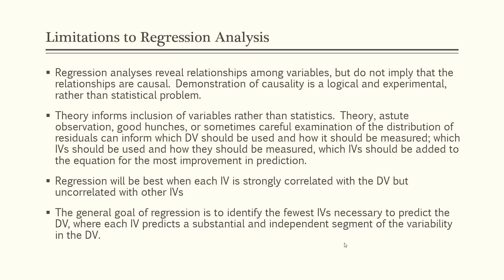We need to have correlation so there's a relationship between our independent and dependent variables — and a strong correlation is best. We don't want our independent variables to be highly correlated with each other, because that will skew our results as correlations get mixed up. We want independent variables that are independent of each other but each correlated with our dependent variable. The general goal of regression is to identify the fewest independent variables necessary to predict the dependent variable — not to dump everything in for 100% explained variance.